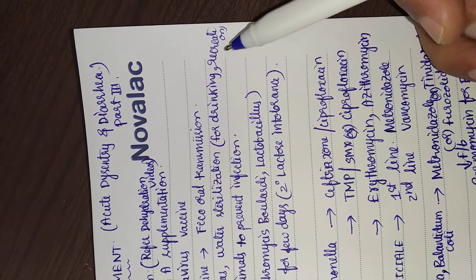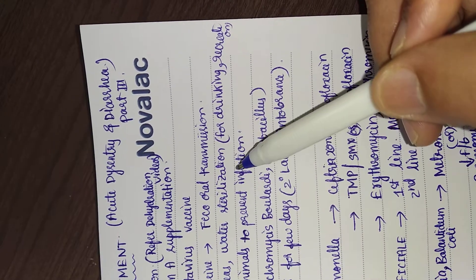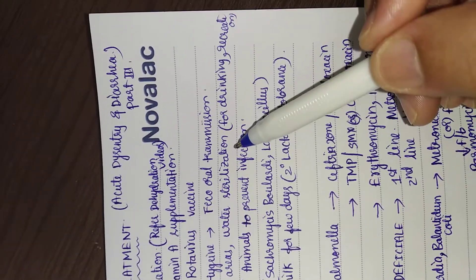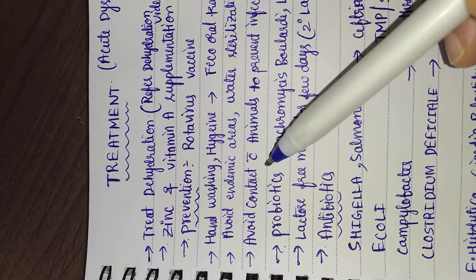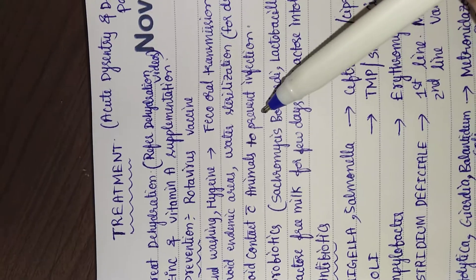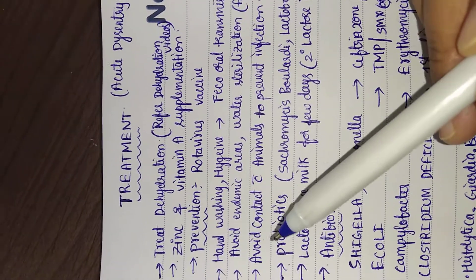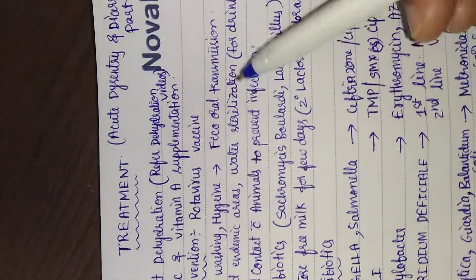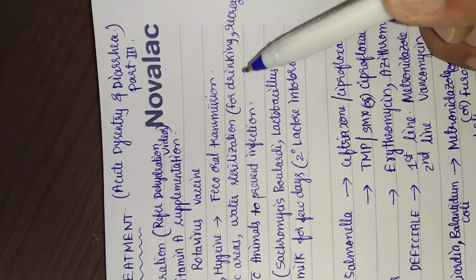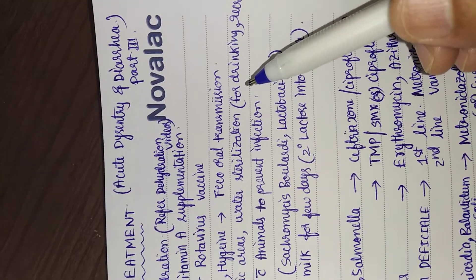Water sterilization should be done to prevent waterborne infections. Avoid contact with animals to prevent infections. Some infections are zoonotic, so should avoid contact with animals. Eat fresh, hot food to prevent food poisoning.